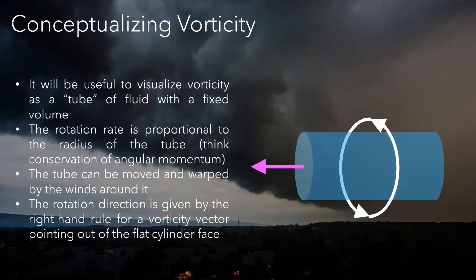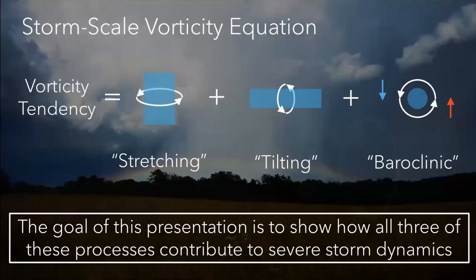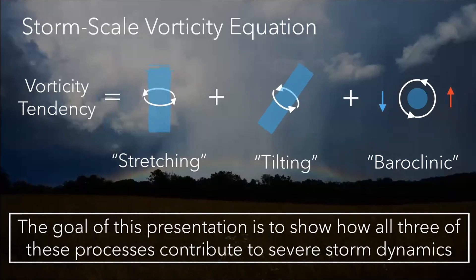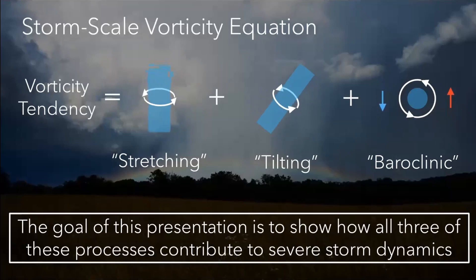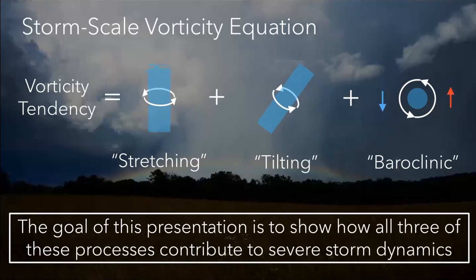That's going to be the vorticity vector. By convention, I'm going to have it pointing out of the flat cylinder face. We're going to move into the vorticity equation — I'm not going to show you the actual equation because it's a lot of vector calculus — but this is a visual representation of what all the different terms do. On the left-hand side where it says vorticity tendency, that's just talking about how the vorticity is changing in time. The three terms on the right are the different things that contribute to that tendency.